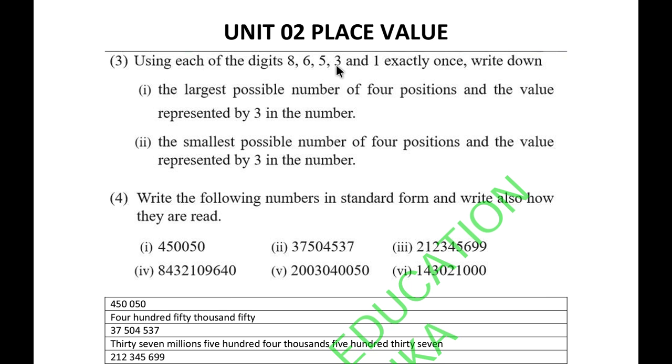The smallest possible number of four positions will be 1,356. The 3 stands in the hundreds position, so the value is 300.